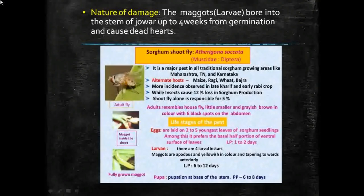These dipteran larvae are called maggots. Maximum infestation is observed in the third and fourth week after sowing. In case of severe attack necessitating resowing of crops, the tillers coming out from the infested plants are also attacked in turn by the pest.